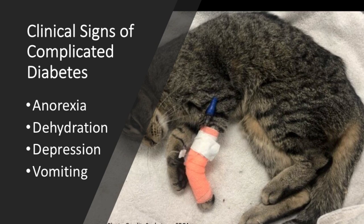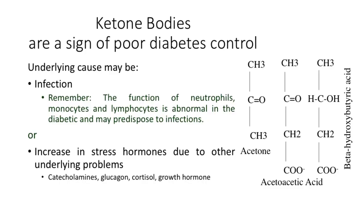The clinical signs of complicated diabetes mellitus include anorexia, dehydration, depression, and vomiting. This can be seen in both diabetic ketoacidosis and in hyperosmolar coma. So these signs, together with your biochemical parameters, which we'll talk about, are key to the diagnosis. It's important to talk about what ketone bodies are because they are fundamentally a sign of very poor diabetic control.